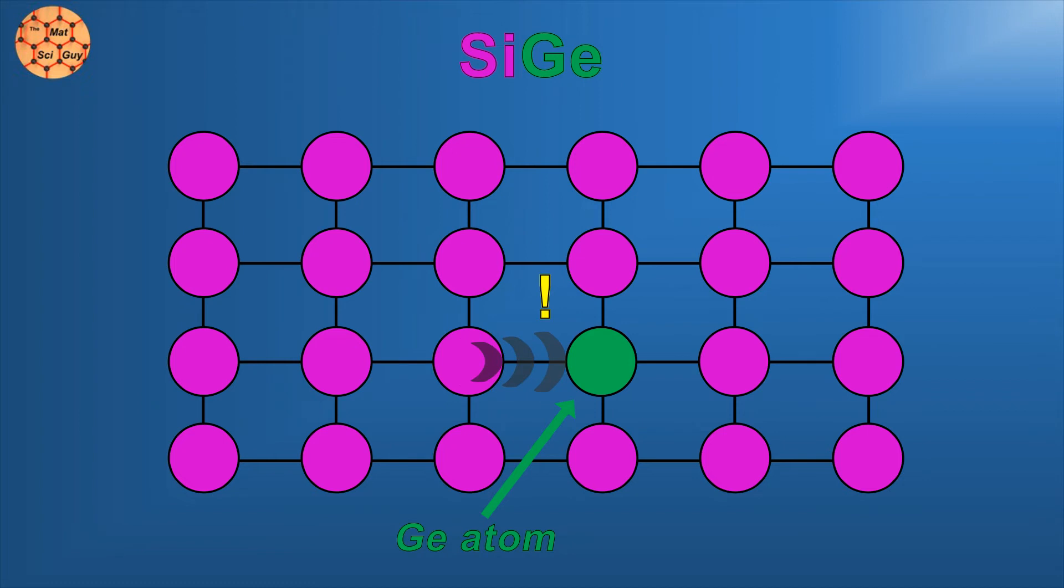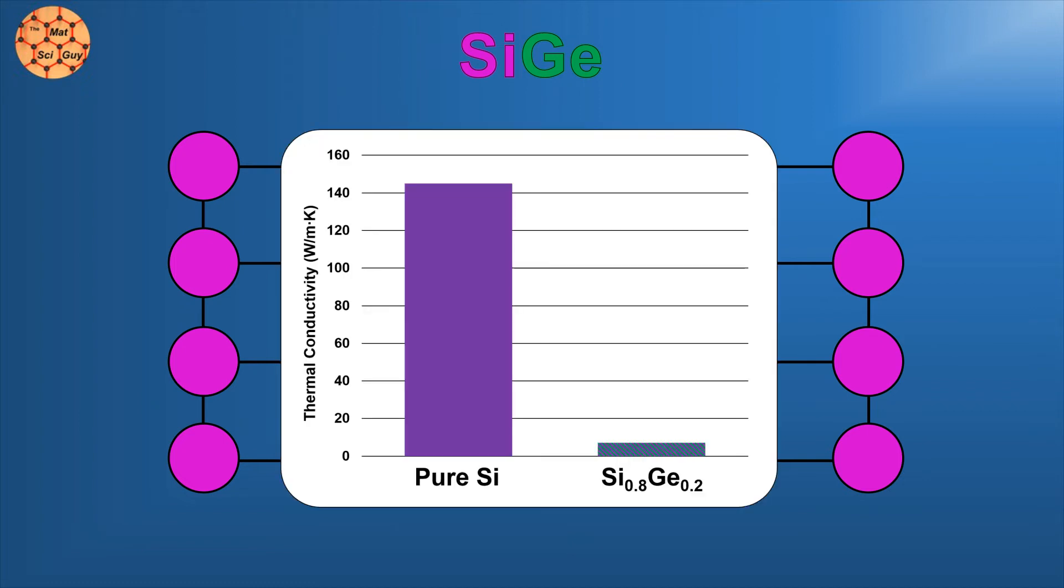The result is that the thermal conductivity of silicon germanium is over 20 times lower than pure silicon, which is great news for our thermoelectric application. Now, before I said there's always a trade-off when optimizing thermoelectric values, and that's still true, but in this case, the huge decrease in thermal conductivity is only slightly offset by other effects.